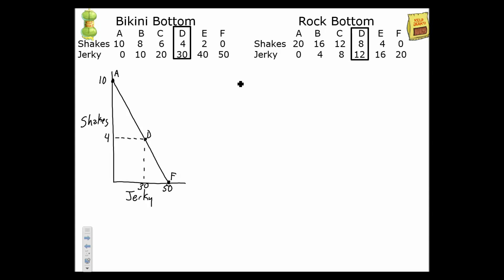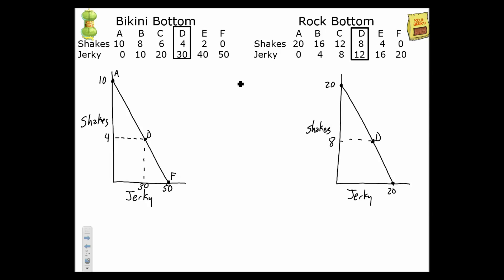Now over here at Rock Bottom, we'll set theirs up. Each of these has constant costs, so we can draw a completely linear curve. We've got shakes on our y-axis and jerky over here. Rock Bottom can produce as many as 20 shakes or 20 jerky or any combination in between. Currently they are producing at point D, which is eight shakes and 12 jerkies. That's point A at the top and point F at the bottom.